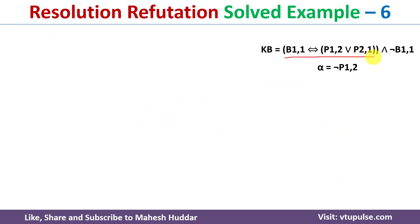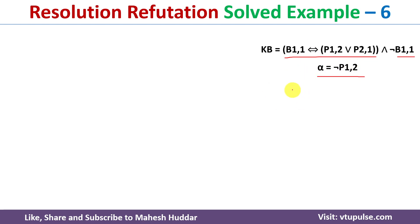We have been given a knowledge base with two clauses. The first clause is B11 biconditional (P1,2 or P2,1). The second one is negation of B11. Given this knowledge base, we want to prove alpha is equal to negation of P1,2 — meaning there is no pit in position 1,2.